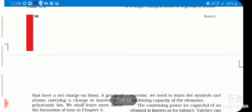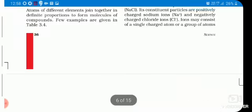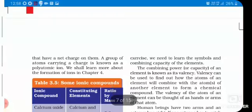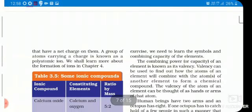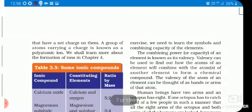Ions may consist of a single charged atom or a group of atoms that have a net charge on them. A group of atoms carrying a charge is known as polyatomic ion.